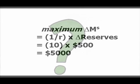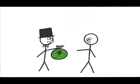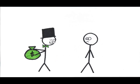Why is this the maximum change that we could see in the money supply? Because banks can lend up to 90% of their deposits, but they don't have to lend 90%. In times of higher risk, banks would most likely want to hold on to more than the legally required fraction of their deposits.